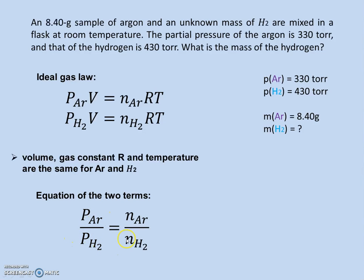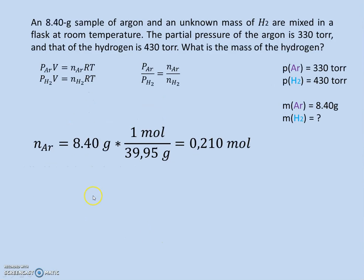by the pressure of hydrogen equals the amount of argon divided by the amount of hydrogen. Now first we want to calculate the amount of argon, which we do by multiplying the mass with the molar mass, which is 39.95 grams per mole, and we'll see that